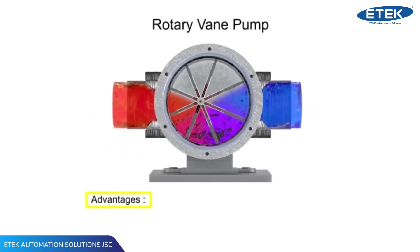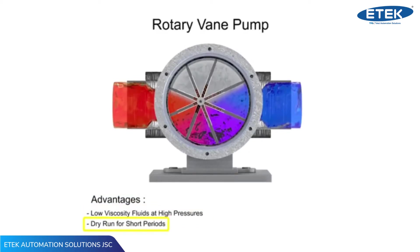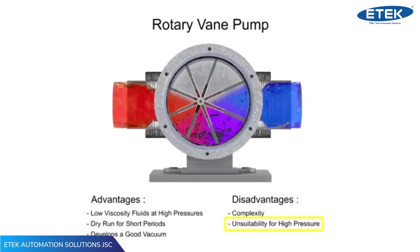The advantages of vane pumps are that they can handle low viscosity fluids at relatively higher pressures, can dry run for short periods, and develop a good vacuum. Their disadvantages include complexity and their unsuitability for both high pressure and high viscosity fluids.